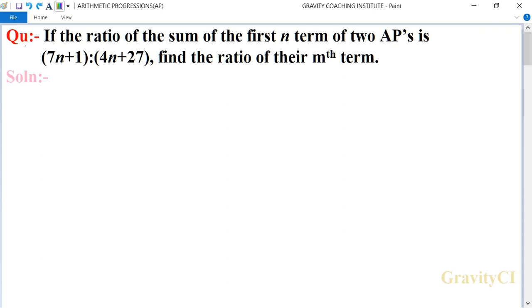Chapter Arithmetic Progressions. Question: If the ratio of the sum of the first n terms of two APs is (7n+1):(4n+27), find the ratio of their mth term. In this question, the ratio of sum of the first n terms of two APs is given as 7n+1 ratio 4n+27.